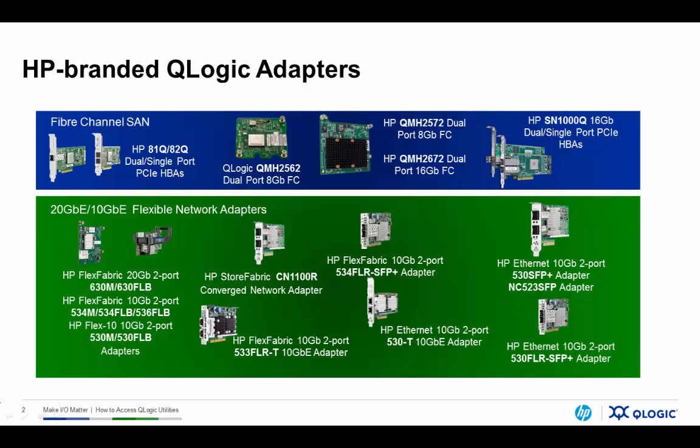For fiber channel adapters, many of you may be familiar with a legacy utility called Sansurfer. Several years ago, Sansurfer was discontinued and replaced by a utility called QConverge Console, which is used to manage today's QLogic fiber channel adapters. This same utility can be used on all HP branded 8GB and Gen5 16GB adapters, including the 81Q and 82Q, the HP QMH2562, 2572, and 2672 mezzanine adapters, and the SN1000Q 16GB PCIe adapters. For the HP 530 and 630 series Ethernet and flex fabric adapters, as well as for the CN1100R converged network adapter from QLogic, we make a utility called QLogic Control Suite available — the utility that works across all of these 530 and 630 series adapters in the HP portfolio.